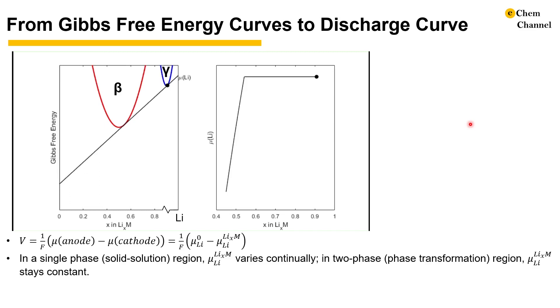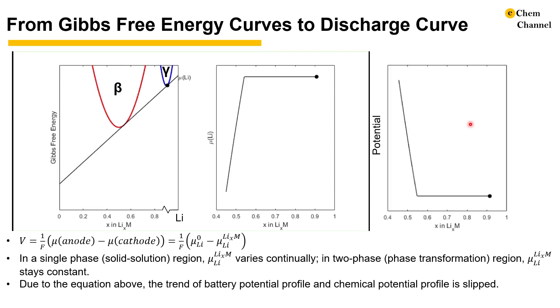As you can see, in the single phase region, the chemical potential varies continually, and in the two phase region, the chemical potential stays constant. Due to the equation above, the trend of battery discharge curve and chemical potential is flipped. It represents only a small section in the overall potential profile in our example, but you get the idea.